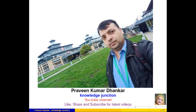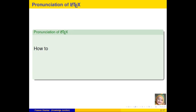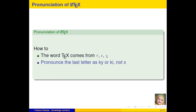Welcome to Knowledge Junction. Do like, share and subscribe for latest videos. Today we are learning mathematical typesetting in LaTeX, which is a scientific writing software. Regarding pronunciation: the word 'TeX' comes from tau epsilon chi — the last character is not 'x', it is 'chi'. Even so, LaTeX is commonly pronounced as 'LaTeX'.